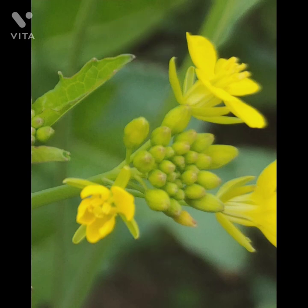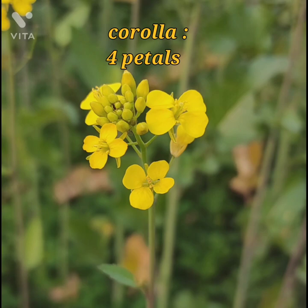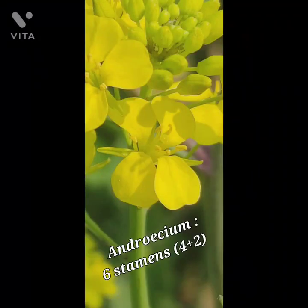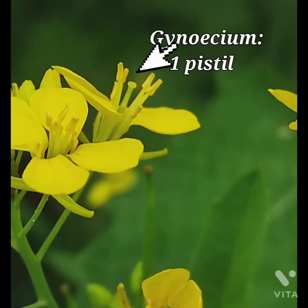You can clearly observe here: four sepals are present which are green in color, four petals yellow in color, six stamens — four long and two short — which is the male part of the flower, and one pistil which is the female part of the flower.